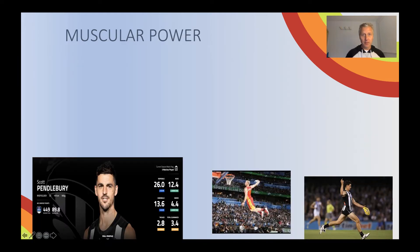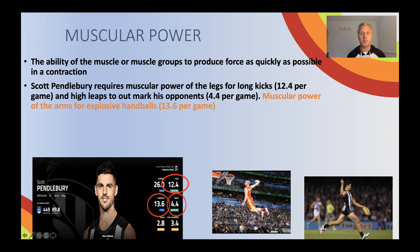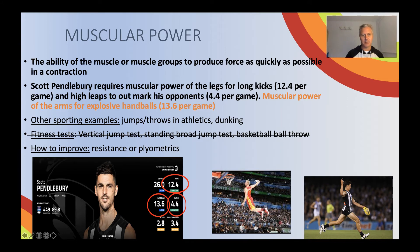I've chosen muscular power as another fitness component. You will have noted that Scott Pendlebury required muscular power of the legs — remember it's muscle-specific — with 12.4 kicks per game and 4.4 leaps for high marks per game. He also uses muscular power in his arms to handball. Your javelins and shot puts are fantastic events requiring muscular power. Resistance training and plyometric training will improve muscular power. Age and gender are front pocket answers for factors affecting, and you'll need at least one other.